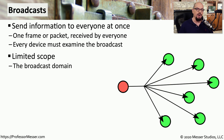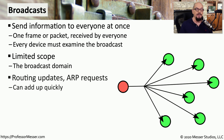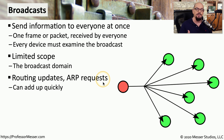Fortunately, broadcasts have a limited scope — they can only traverse networks connected in a single broadcast domain. When we talk about using a VLAN, that VLAN is a broadcast domain, and any broadcast sent to that VLAN will only be sent to other devices on that same VLAN. With IPv4, it's very common to see broadcasts, such as routing updates and ARP requests.